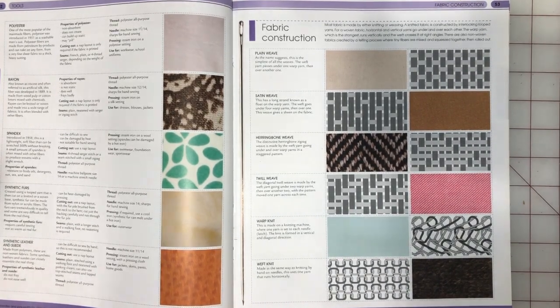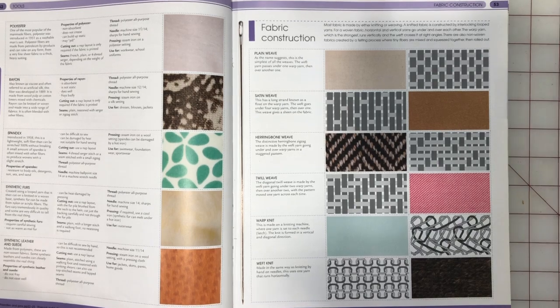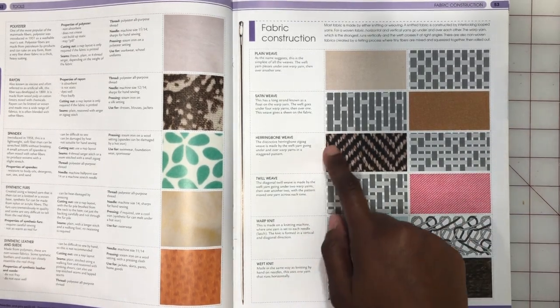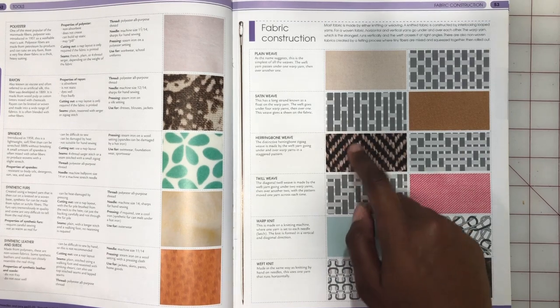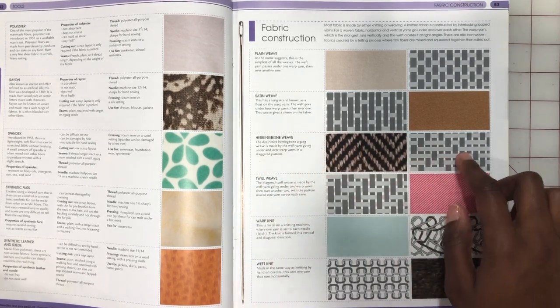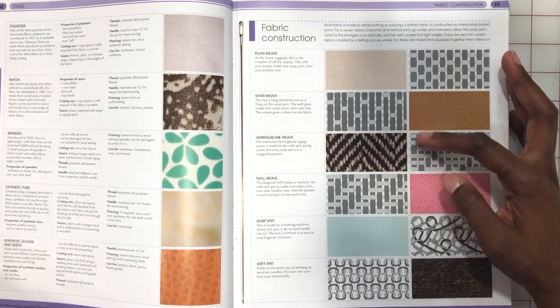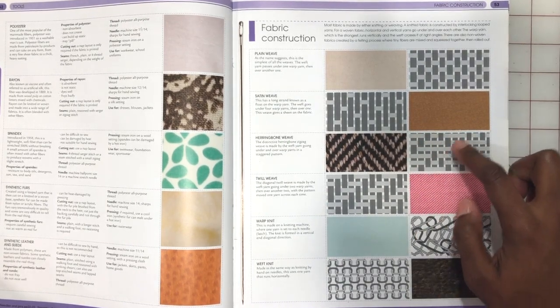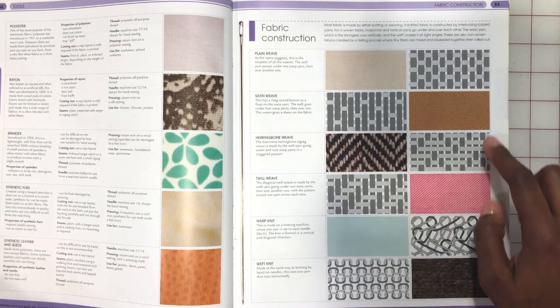Next we have the herringbone weave, and as you know herringbone is a pattern within itself and it just gives off this zigzag pattern here as you can see. And how that pattern is created is just sort of this staggered overlapping pattern that eventually gives way to this decoration, as you can see the zigzag.